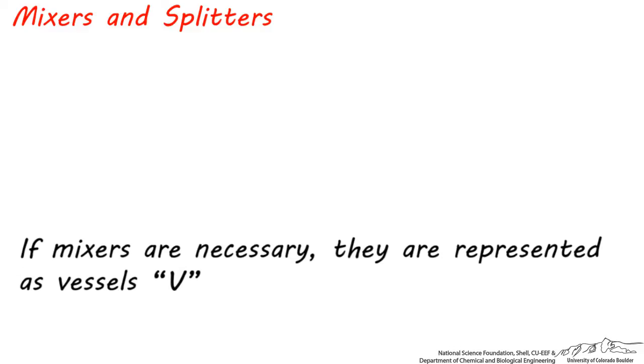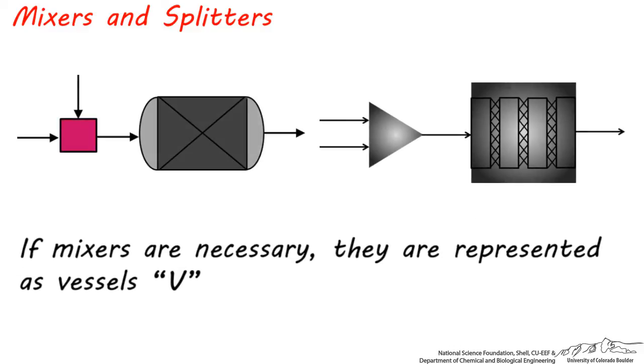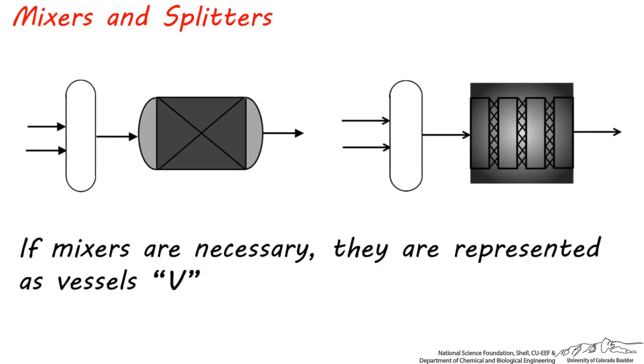So for example, while these may be representations of mixers in ChemCAD or Aspen, if an actual mixer is necessary before these reactors, they should be represented as vessels like this on a process flow diagram.